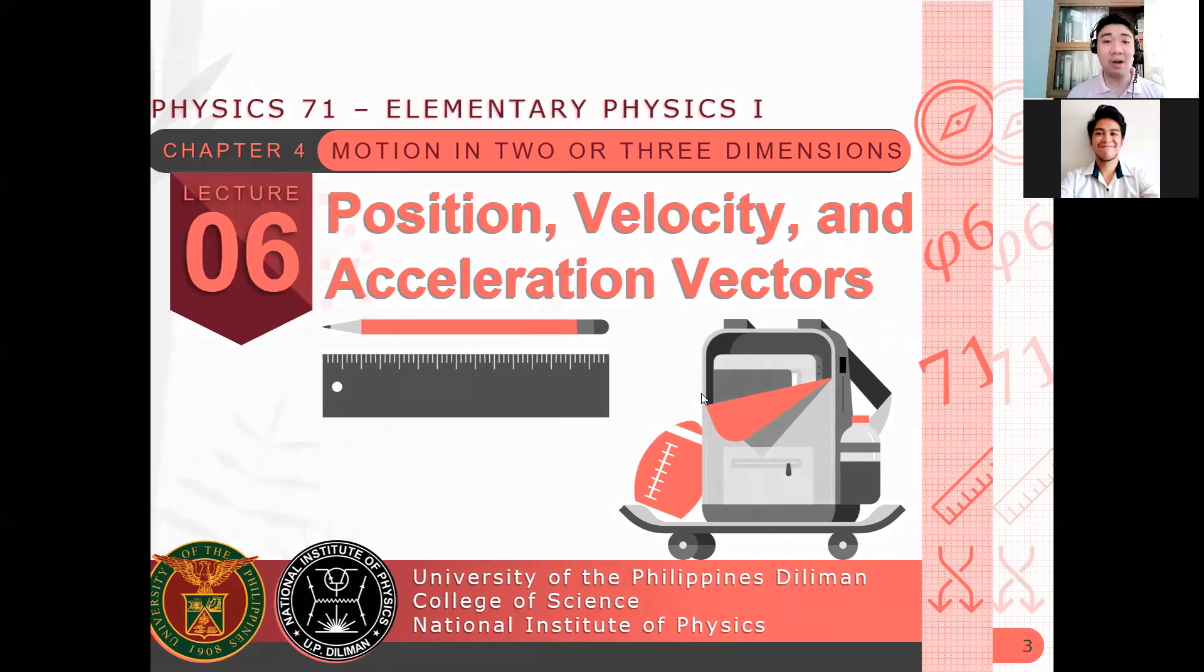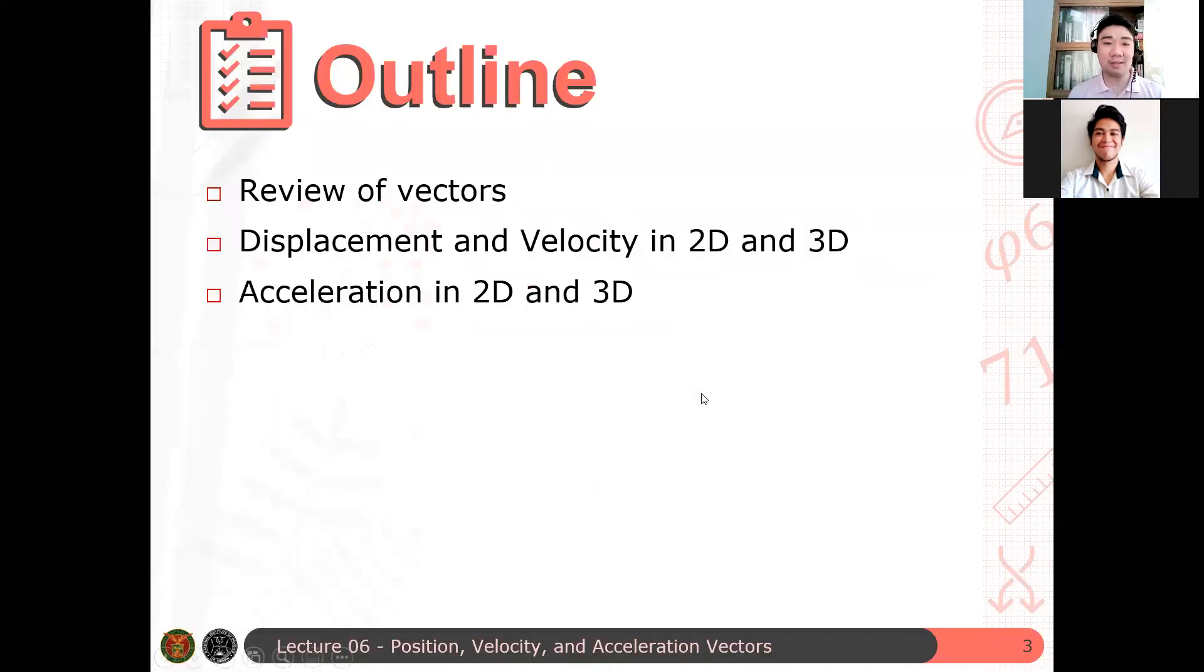So without further ado, let's go to our outline. The outline for this discussion is, again, let's review our vectors, because we will be dealing with a lot of them in this lecture. And then after that, we define our displacement and velocity vector now in 2D and 3D. So remember, in 1D, we have our definition of displacement and velocity. Now let's extend this definition to 2D and 3D.